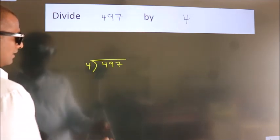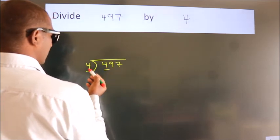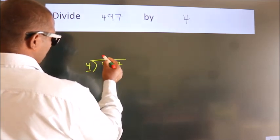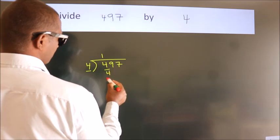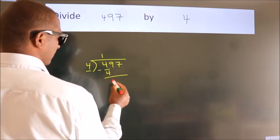Next. Here we have 4, here 4. When do we get 4? In 4 table. 4 once 4. Now we should subtract. We get 0.